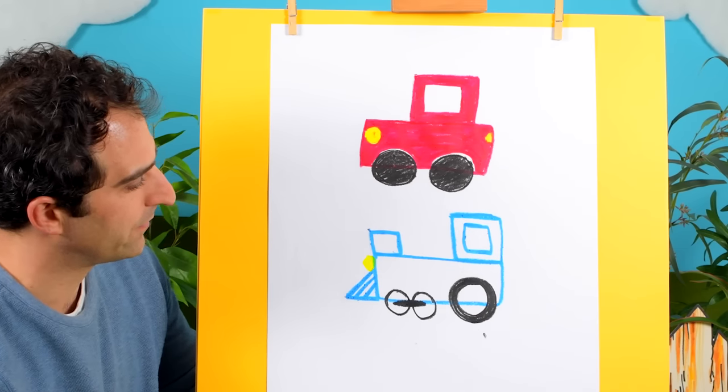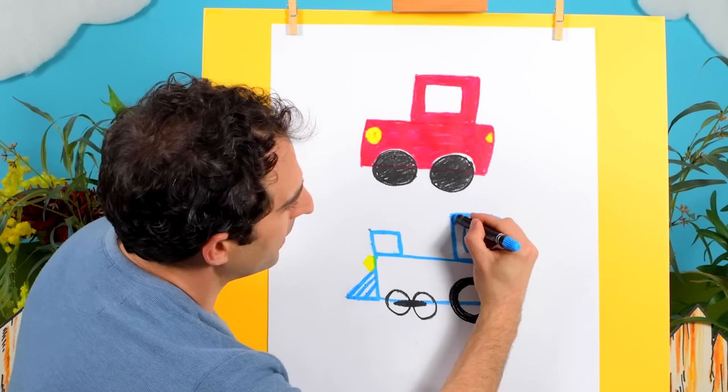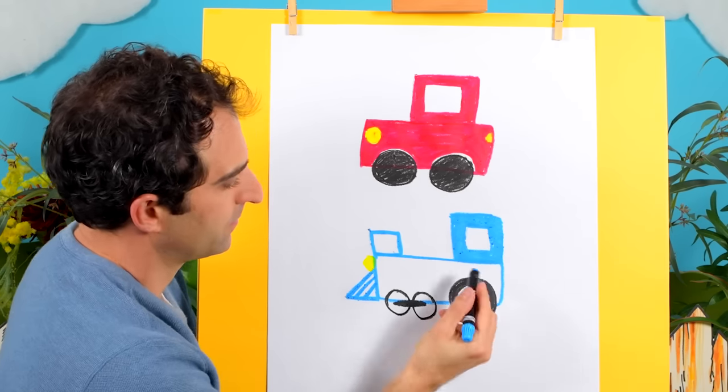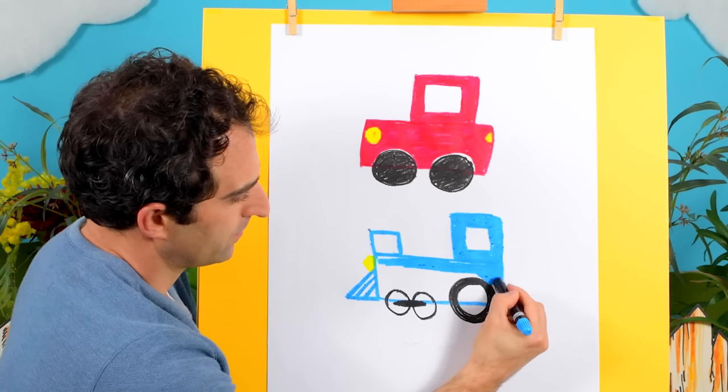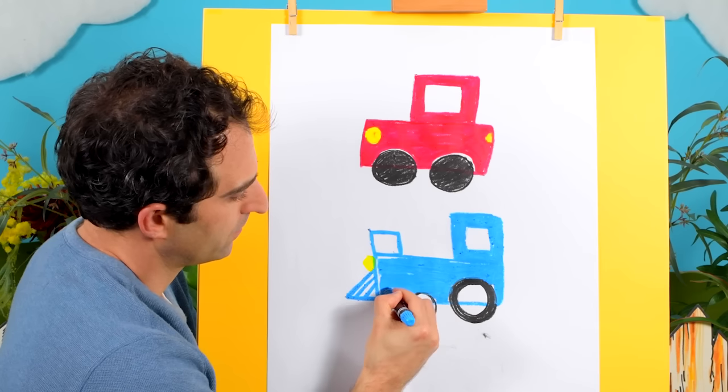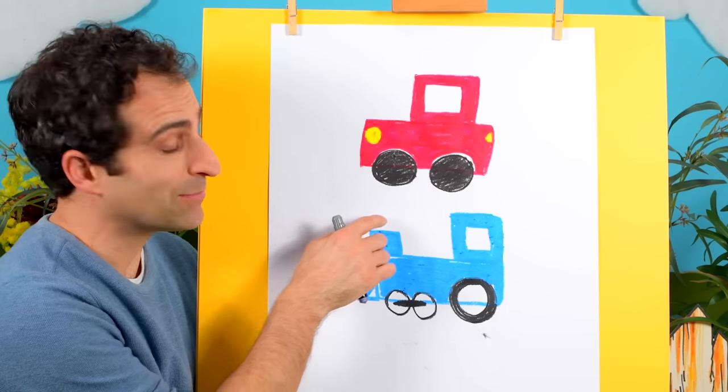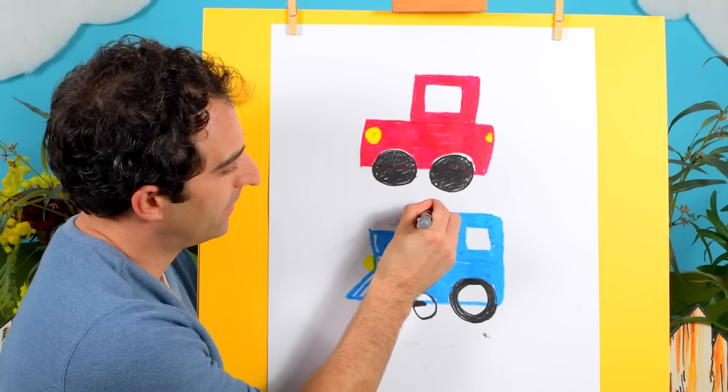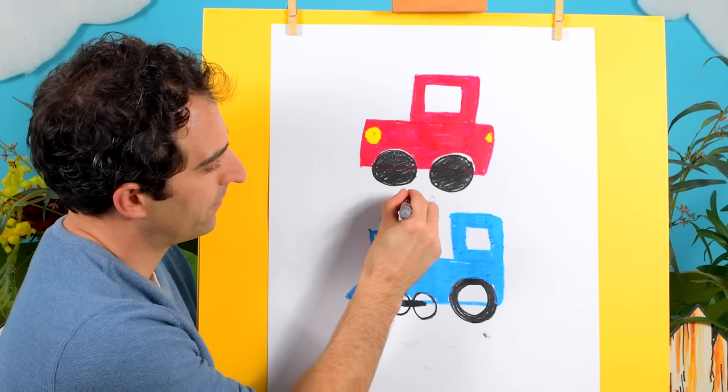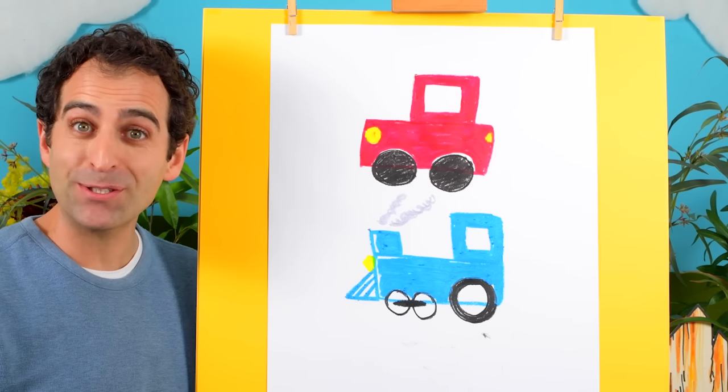That looks great. And we can color in these parts blue. And we can add some smoke coming out the front here. There we go. And there we go. There's our train.